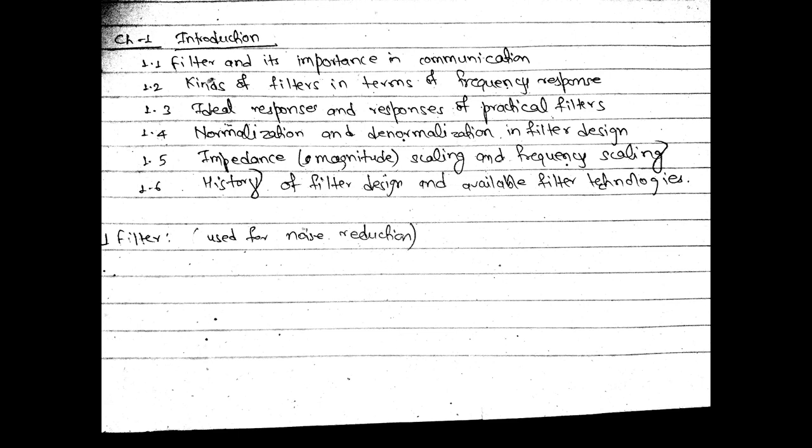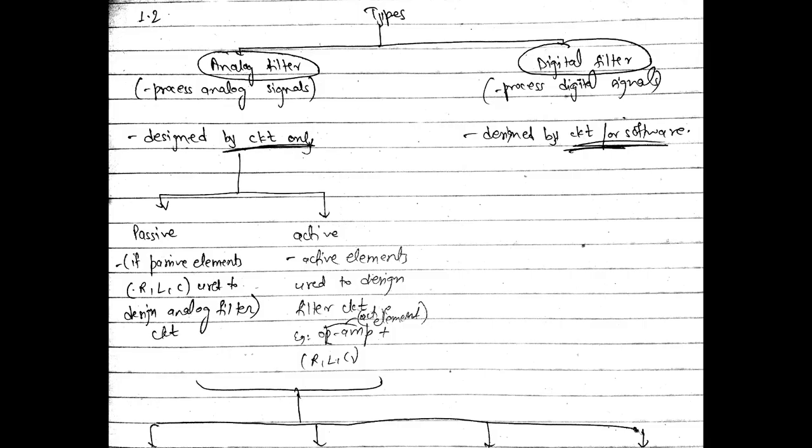A filter is a circuit which either passes or blocks a frequency, or passes or blocks a band of frequencies. We need a filter to remove unwanted noise in the circuit and to pass or block a required range of frequencies. Here we will be discussing only analog filters.